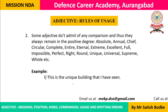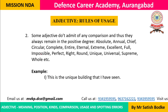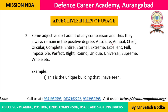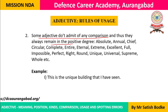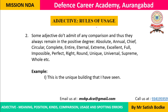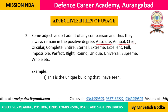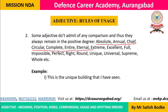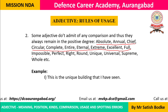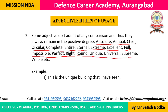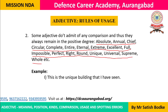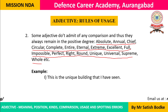Rule 2: Some adjectives don't admit of any comparison and remain only in the positive degree. These are extreme adjectives such as: absolute, annual, chief, circular, complete, entire, external, extreme, excellent, full, impossible, perfect, right, round, unique, universal, and supreme. These cannot be used in comparative or superlative form. You cannot say 'more impossible' or 'most perfect', because impossible means completely not possible — there are no degrees of impossibility. Perfect means having no flaws — nothing can be more or less perfect.